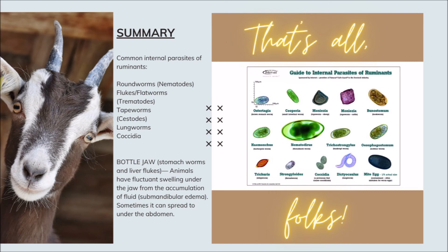It is very important that before you give dewormers, please conduct or submit fecal eggs for fecalysis, because there is no single dewormer that can kill all worms. For example, if tapeworms are seen in the lab, the vet would likely prescribe praziquantel, or other dewormers more effective on certain parasitic loads. That is why fecalysis is very important when considering the effectiveness of certain drugs. Also, when deworming, ask your veterinarian for rotation of dewormers to prevent anthelmintic resistance in your herd or farm.